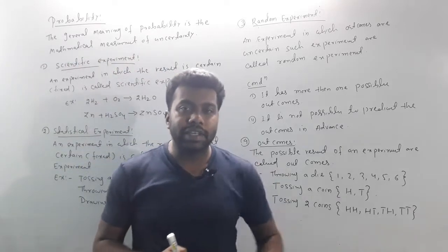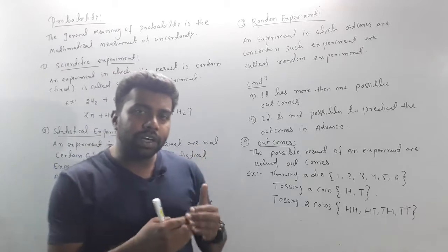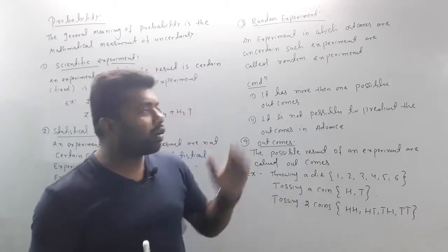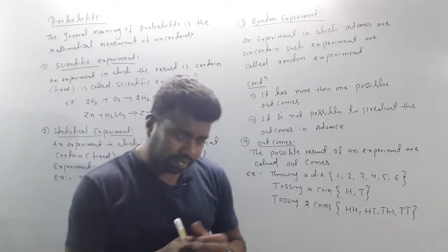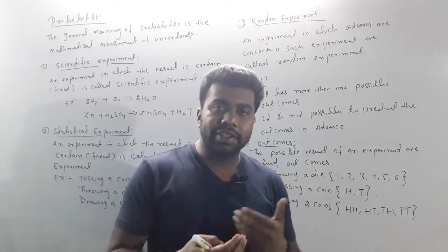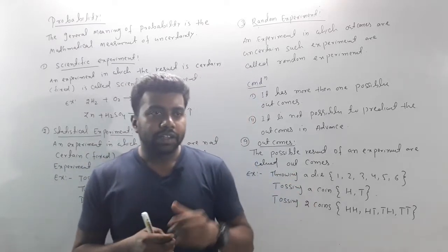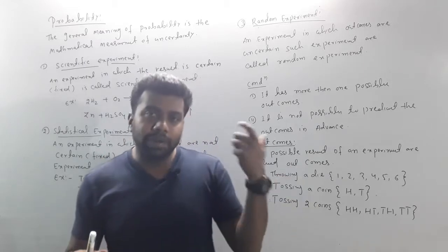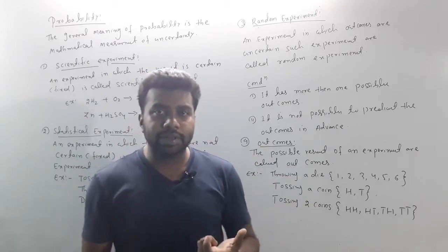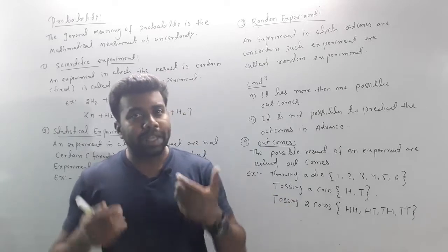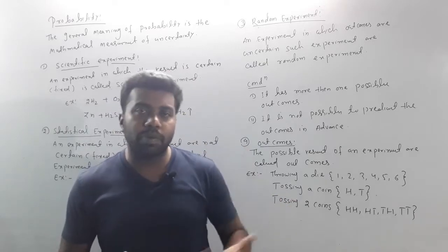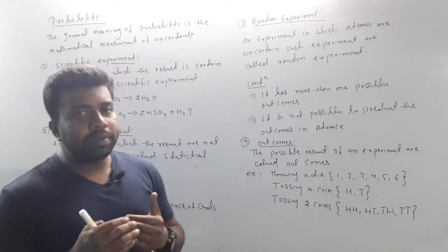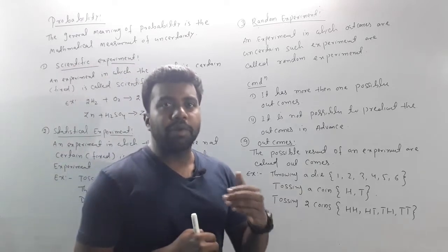The mathematical meaning of uncertainty — the possibility of mathematical probability — the same method is probability. Simply, probability means possibility: the number of chances. For example, if you have a student, then they will pass or fail, and we have to calculate the total number of chances — that is probability.